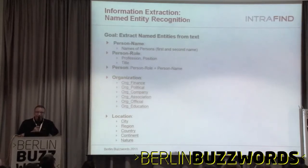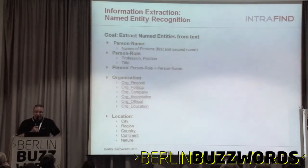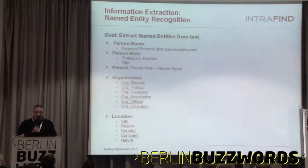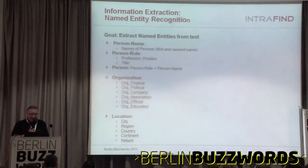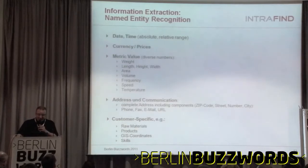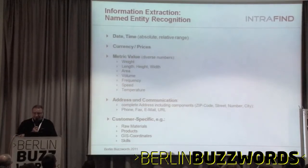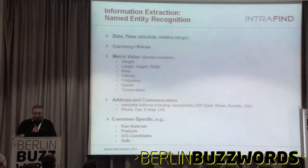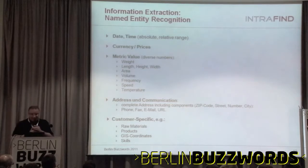Named Entity Recognition: the goal is to recognize entities within text — persons (with first name, second name, profession, title), organizations (with subtypes like financial organizations, political parties), locations (city, region, country), currency prices, and complete addresses including zip code, street number, phone number, and so on. We also do customer-specific entities like raw materials, products, GIS coordinates, and skills for human resources analyzing CVs automatically.